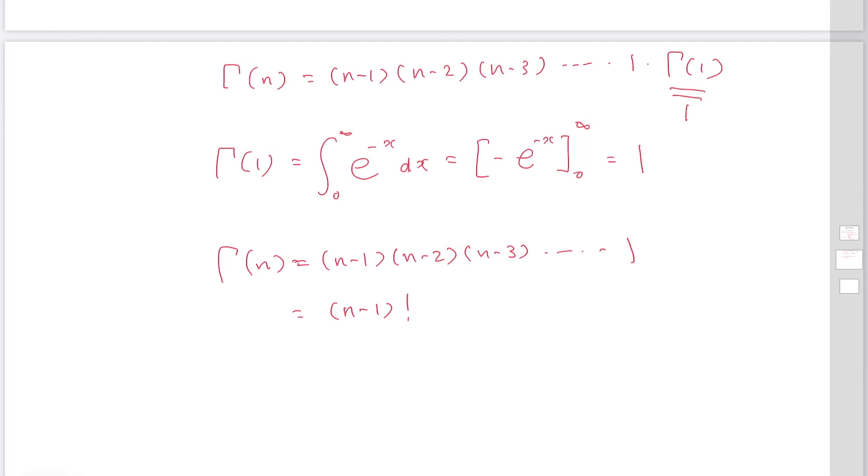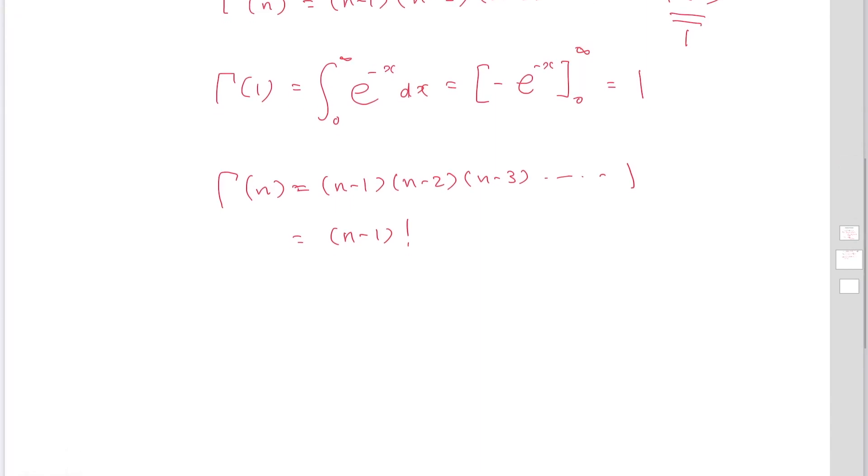So for example, if you try to calculate gamma 4, it becomes factorial of 3, so it's 3 times 2 times 1, which is 6.